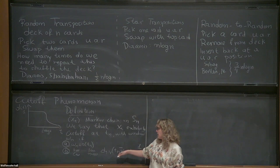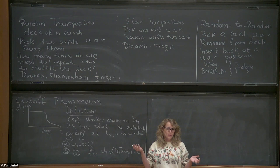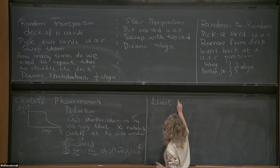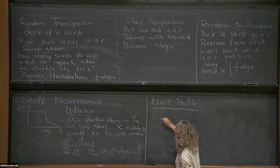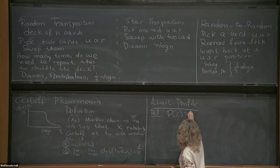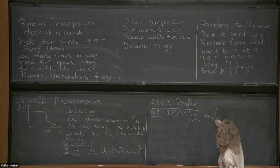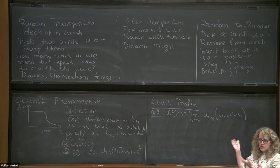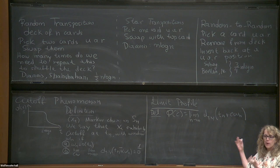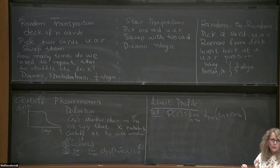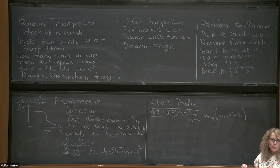The limit profile is something sharper than cutoff. Cutoff just asks what happens at the infinity limits. The limit profile asks for the exact function at any value of c: the limit as n goes to infinity of the total variation distance at t_n plus c times w_n. The first question is whether cutoff implies the existence of a limit profile. At least for the first two card shuffles we know the limit profile — the open question is what it is for random-to-random.